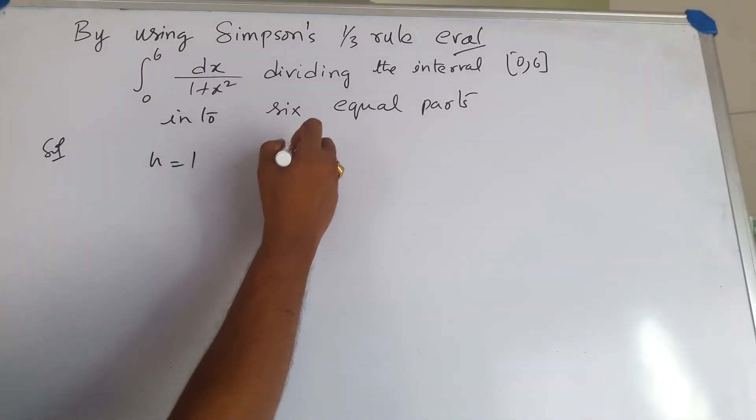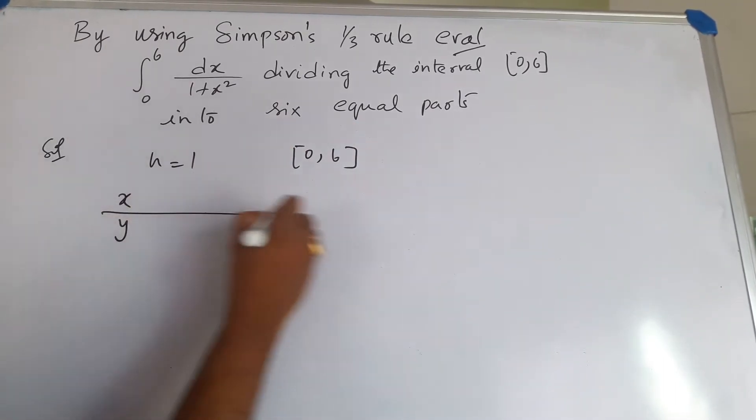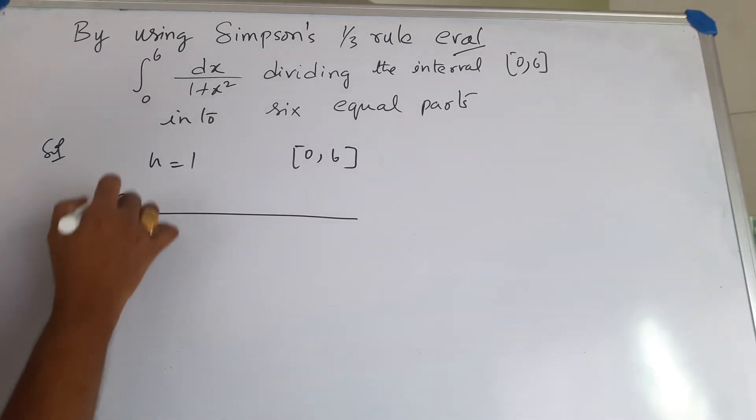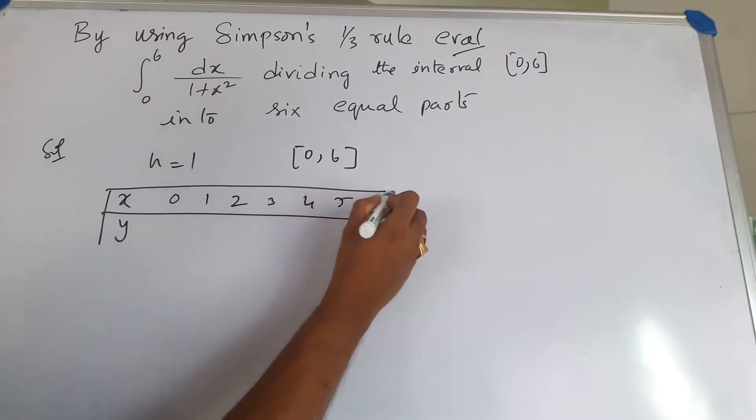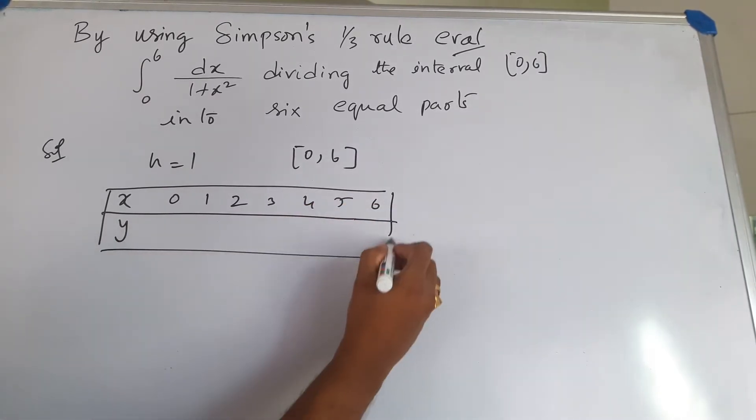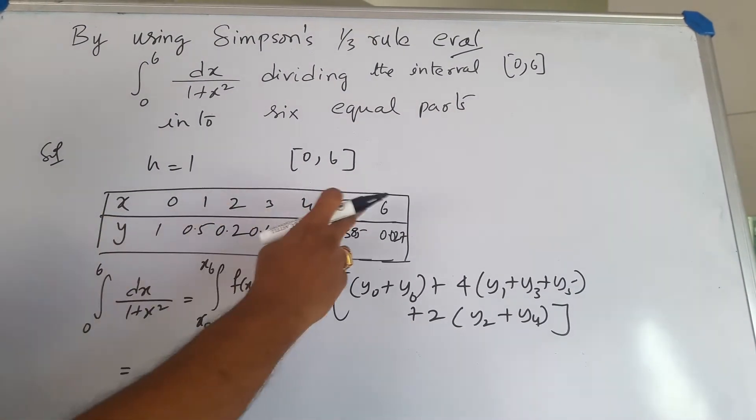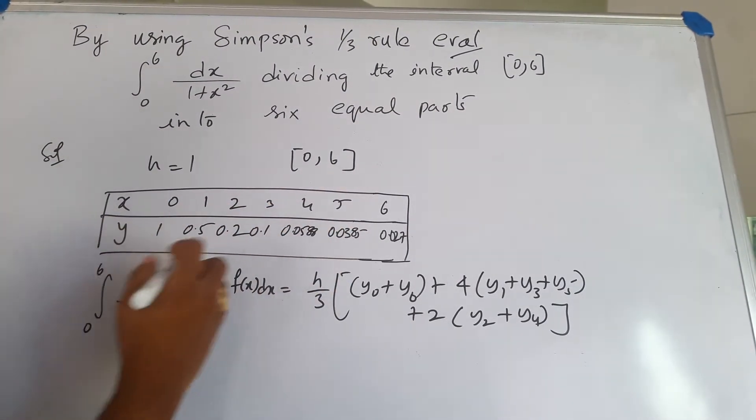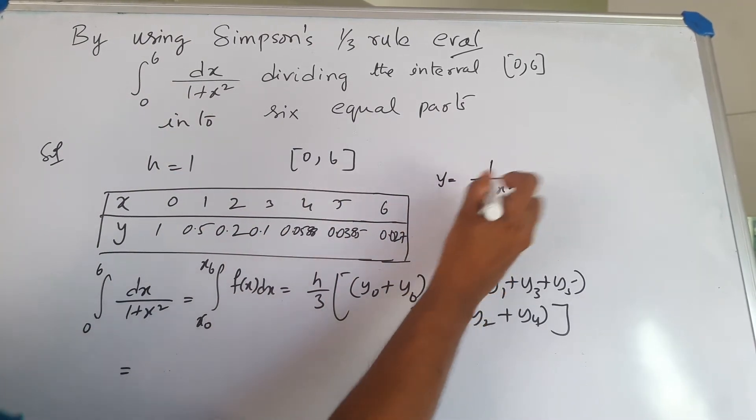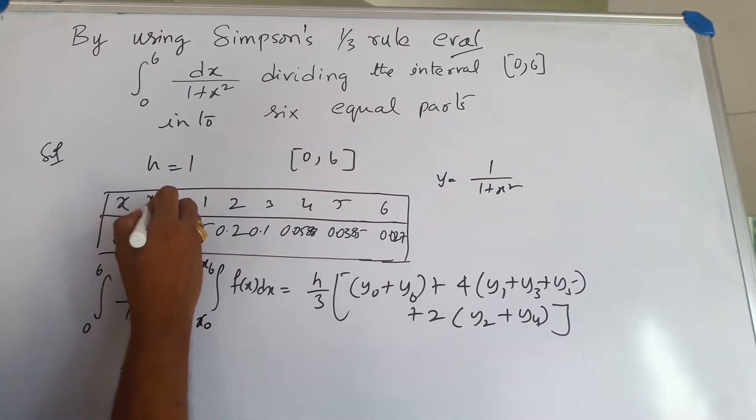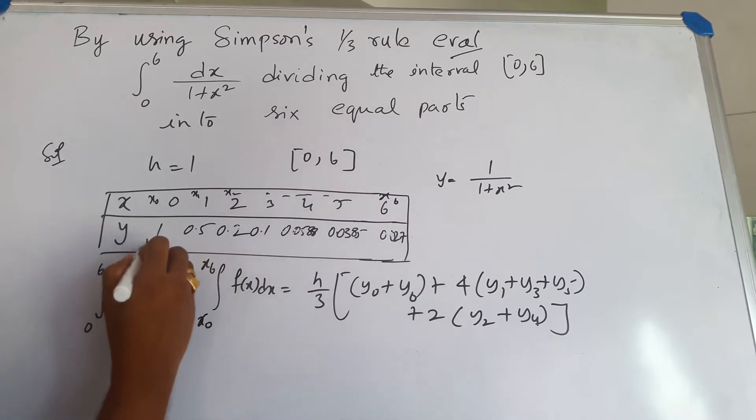Over the interval 0 to 6, create a table with x and y values: x equals 0, 1, 2, 3, 4, 5, 6. Now find the corresponding x and y values by substituting y being 1 divided by 1 plus x squared. Substitute the x values x0, x1, x2 through x6, corresponding to y0, y1, y2 through y6.